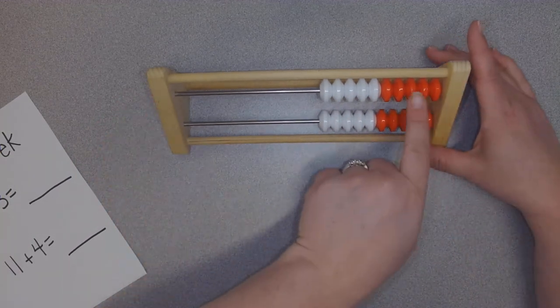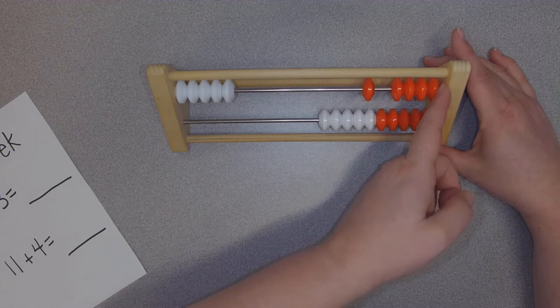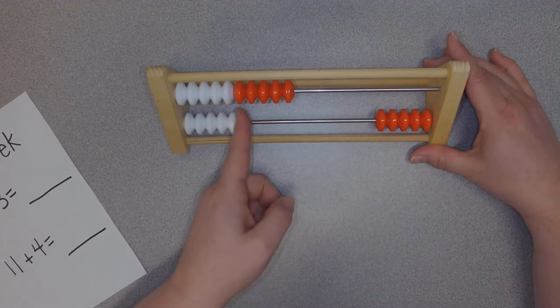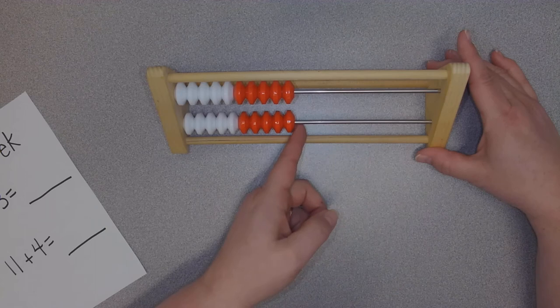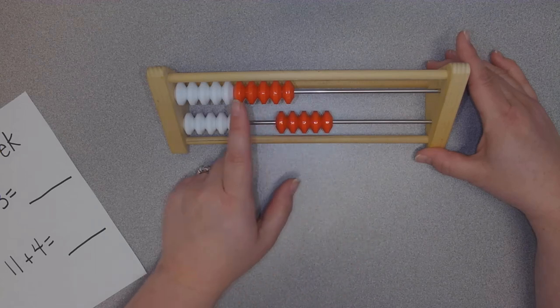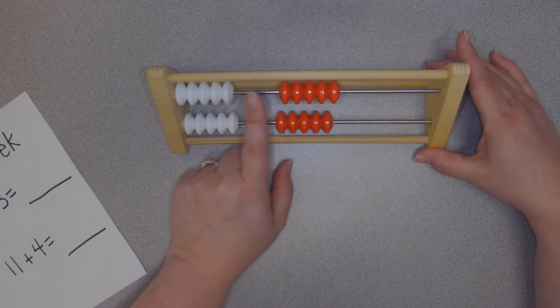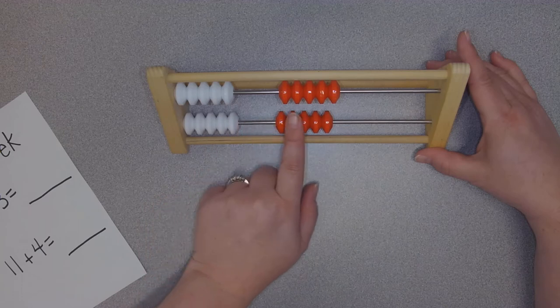On the top row we have five of one color, five of another color, and then five of one color and five of another color on the bottom. If we counted by five, we could see five, ten, fifteen, twenty.